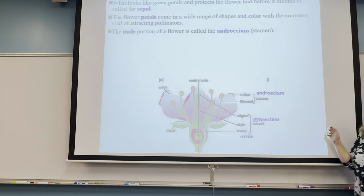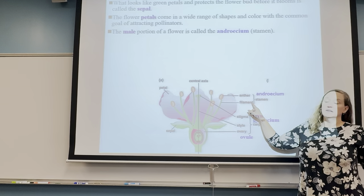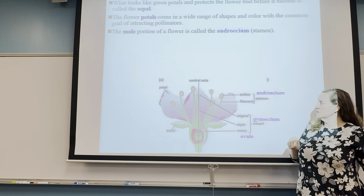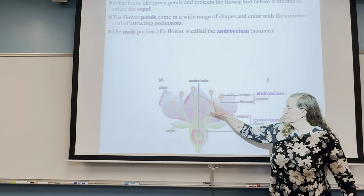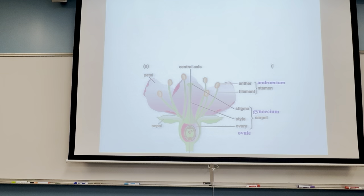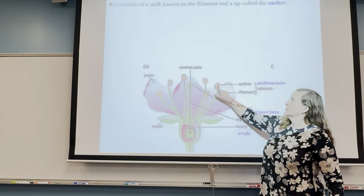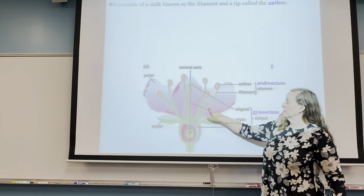The male portion of the flower is called the stamen, or androecium. There are two parts to the stamen: the anther and the filament.